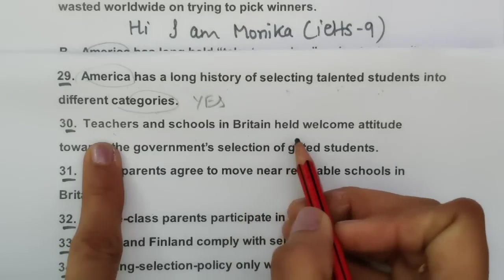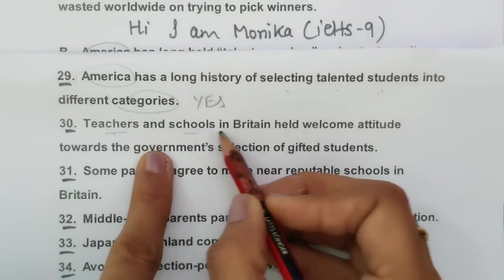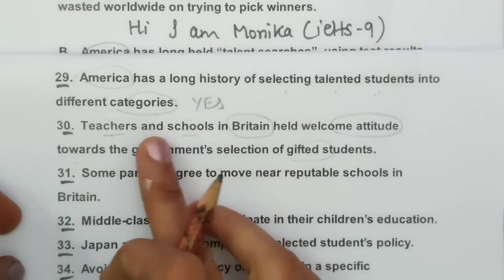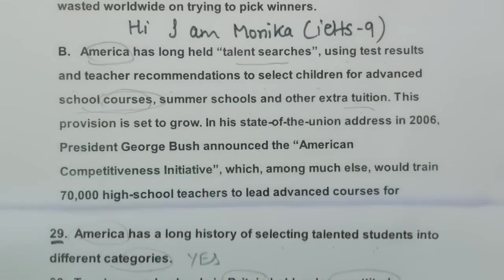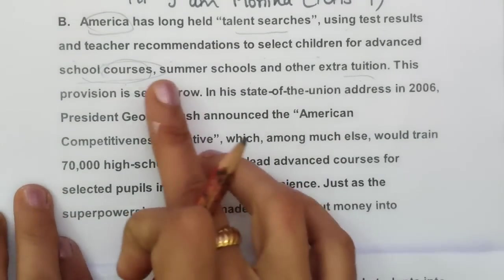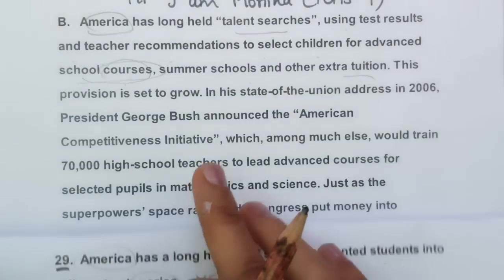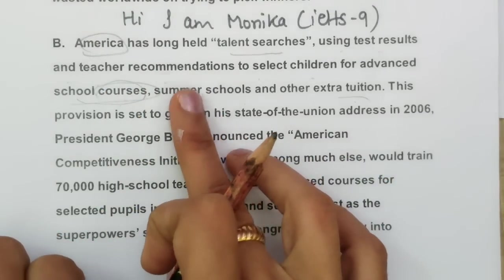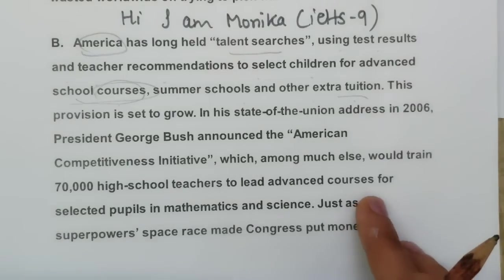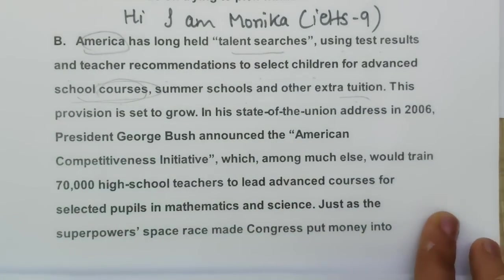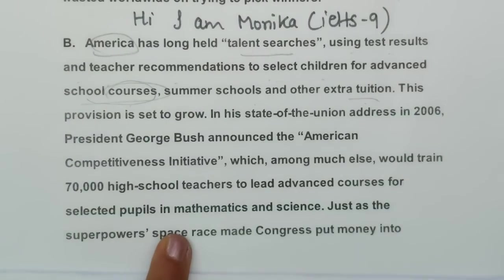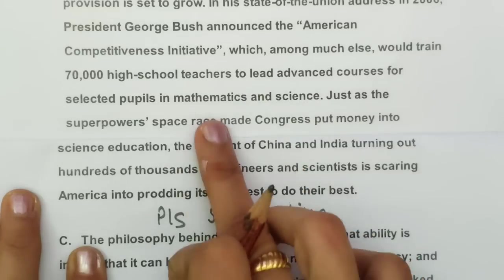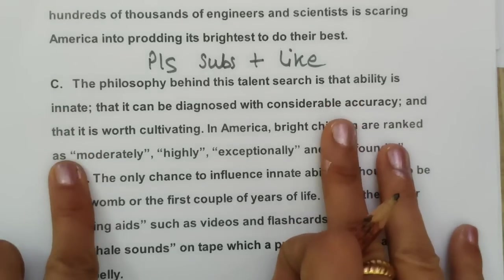Question 30: 'Teachers and schools in Britain held a welcome attitude towards the government selection of gifted students.' I will look for 'Britain' and 'government selection of gifted students.' I scan through paragraphs A and B — no Britain-related teacher discussion found — and move to paragraph C, still finding only content about America.